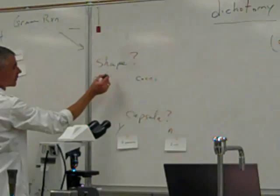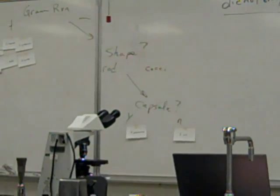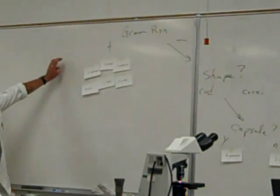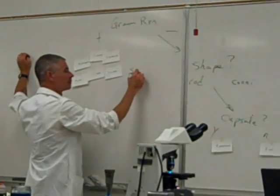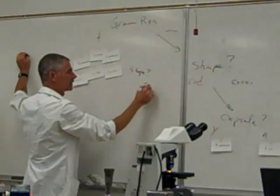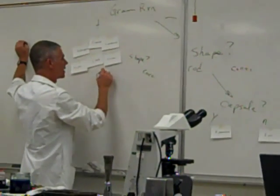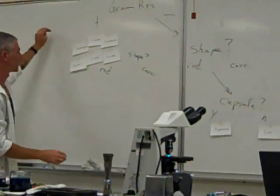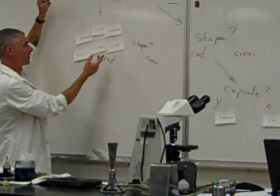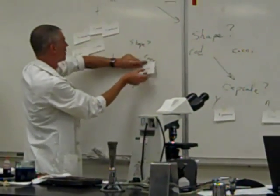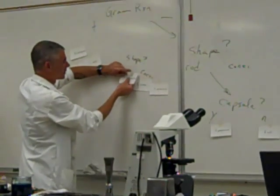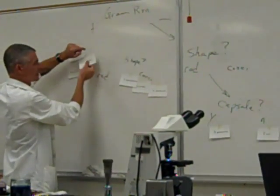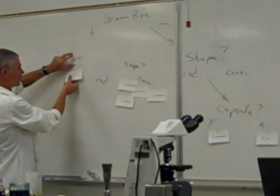But from general to more specific. We've got a bunch of gram positives now. And we can ask the same question about shape. Coxi, coxi, coxi, coxi, coxi. Dermatus. Coxi, coxi, coxi. And these two are rods.